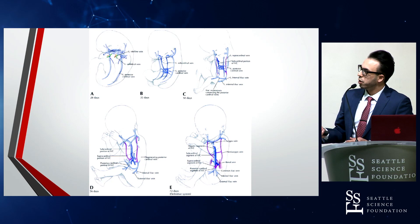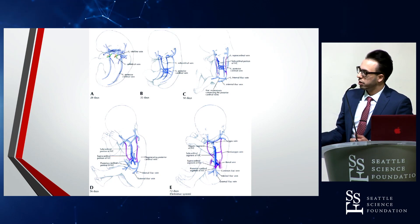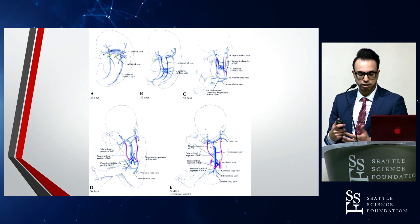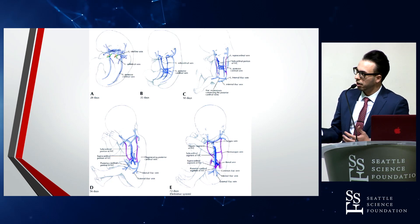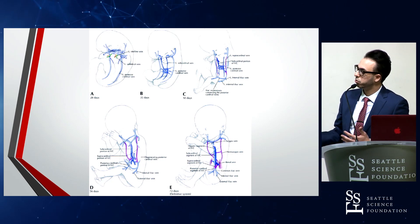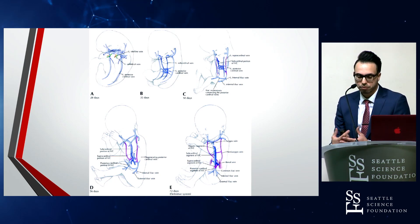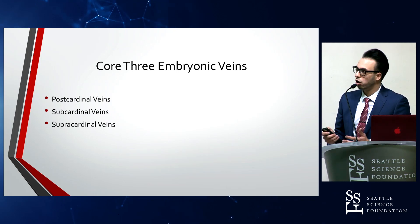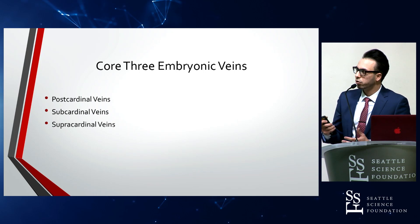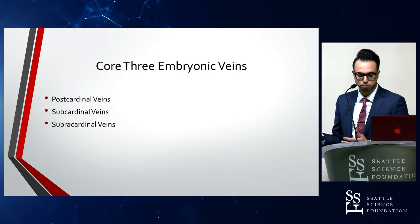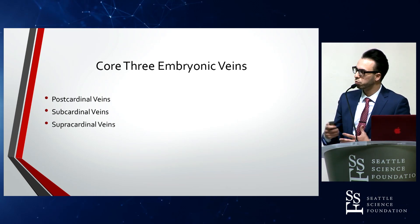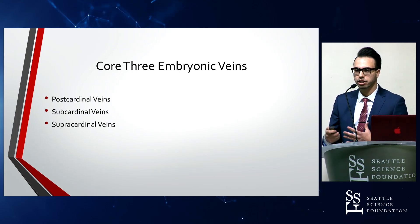When looking at the embryology, you can see in figure A a very early two-paired system, and by figure E a final one-paired system. The transition from two-paired to the definitive venous system involves constant replacement, regression, and anastomosis of three paired essential veins. This remodeling occurs during embryogenesis around four to eight weeks of gestation. The three core embryonic veins — all paired — are the postcardinal veins, the subcardinal veins, and the supercardinal veins, which go through different anastomosis, regression, and progression. The best way to think about this embryological process is as a framework of pipes and different connection points.